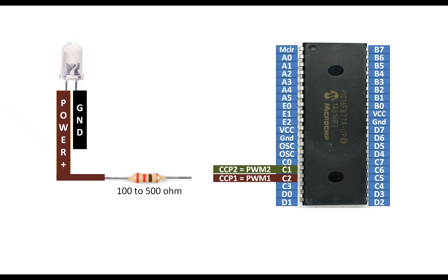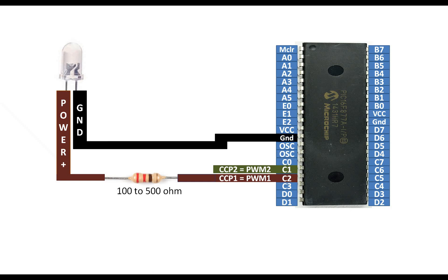Connect the longer pin of the LED — that is the power pin — with one end of the resistor. From the other end of the resistor, you can connect to any of the two PWM pins. I am using PWM1 pin, that is pin number 17 of the PIC16F877A microcontroller. For the ground, connect it directly with the common ground of the circuit.